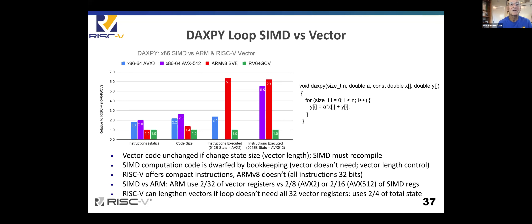There's about a factor of two difference — twice as many instructions for SIMD than for vector. For the code size itself, RISC-V is even more efficient, because besides fewer instructions, we have compact 16-bit instructions whereas ARM chose to use all 32-bit instructions. So RISC-V programs are smaller. And when we look at instructions executed, there are big benefits there as well. We set the state to have the same number of register bits in the two comparisons — one to the 128-bit case and one to the 2048-bit case. RISC-V has this idea where if you don't need all the registers, you can make them longer. RISC-V's variable-length approach gives a significant advantage in executed instructions over both ARM NEON and Intel AVX.